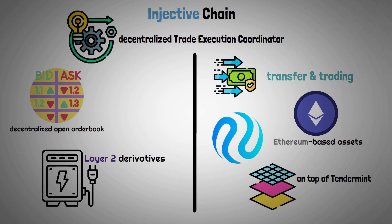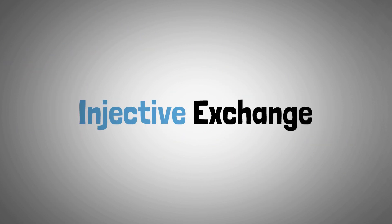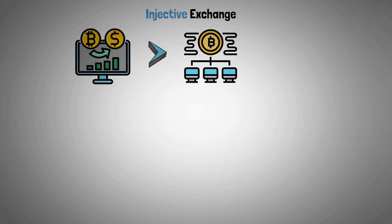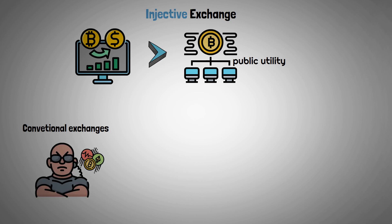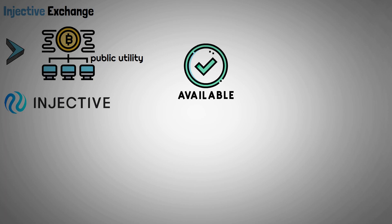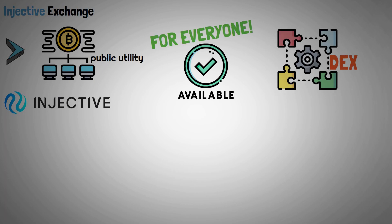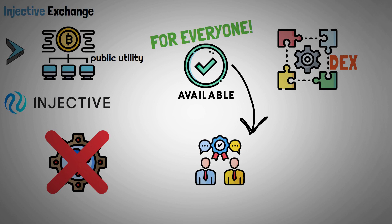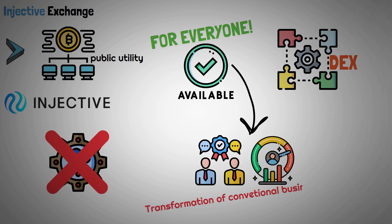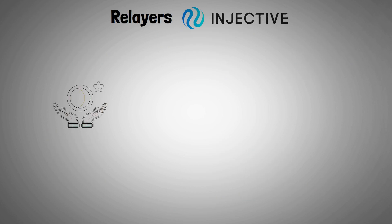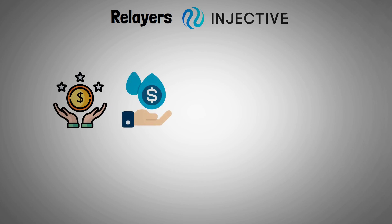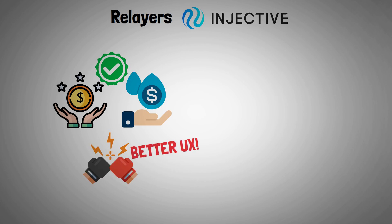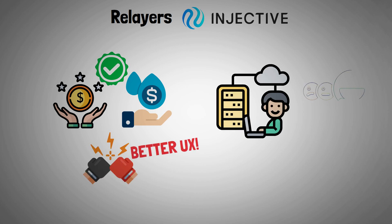The second component is the Injective Exchange. Injective turns an exchange into a decentralized public utility, unlike conventional exchanges which act as gatekeepers to the cryptocurrency industry. It makes available to the general public each element of a decentralized exchange, removing the technical barrier to entry and enabling individuals to freely operate a highly performative exchange. Relayers in the Injective Network are rewarded for sourcing liquidity, and exchange providers are encouraged to compete with one another to offer better user experiences.